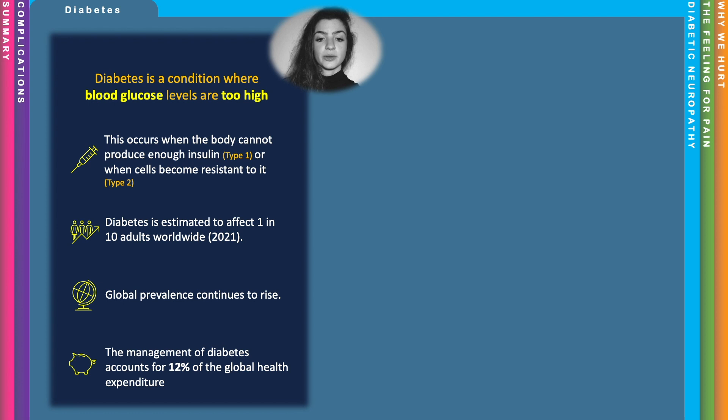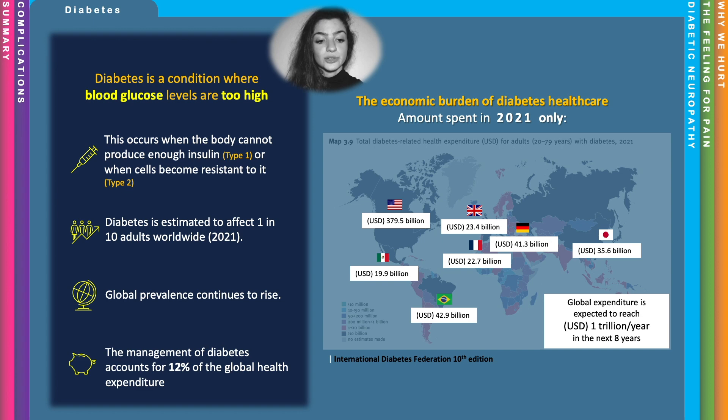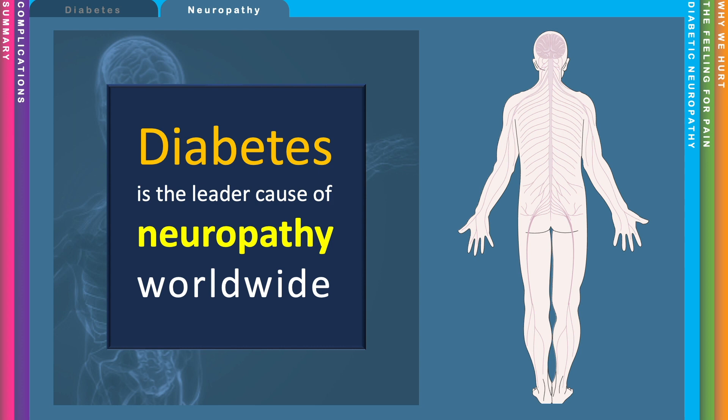You can see the economic burden of diabetes in healthcare systems of diverse countries. For example, this is the amount of money spent on diabetes in each of these countries in 2021 alone, and the global expenditure is expected to reach 1 trillion in the next 8 years, which is pretty shocking.